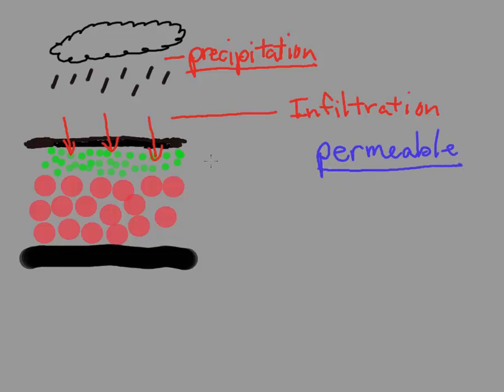The smaller particles have less permeability. The larger particles are going to have bigger spaces called pores, and that's going to have more permeability.